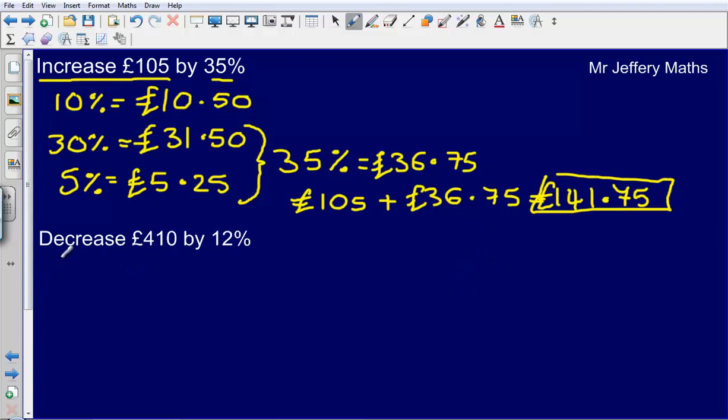Next one, we're asked to decrease £410 by 12%. First off, let's work out what 10% is. 10% gives me £41. Then I'm going to work out what 1% is by dividing my 10% by 10. So that gives me £4.10.